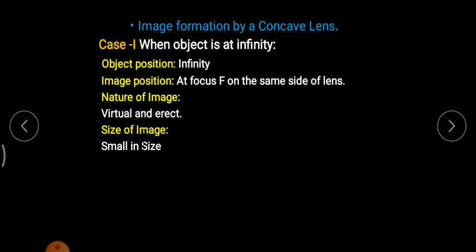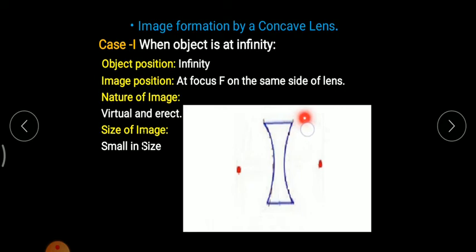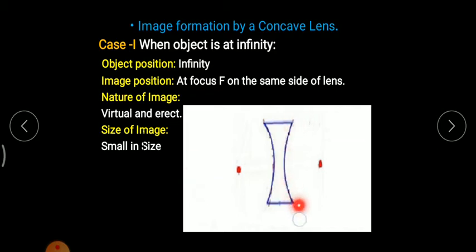In the previous video, we studied image formation using convex lens. In this video, we will study image formation using concave lens. This is a concave lens — it has two refracting surfaces, and for each surface there is a first focus F and 2F. You do not need to worry about first and second focus at this point; simply remember focus and 2F.